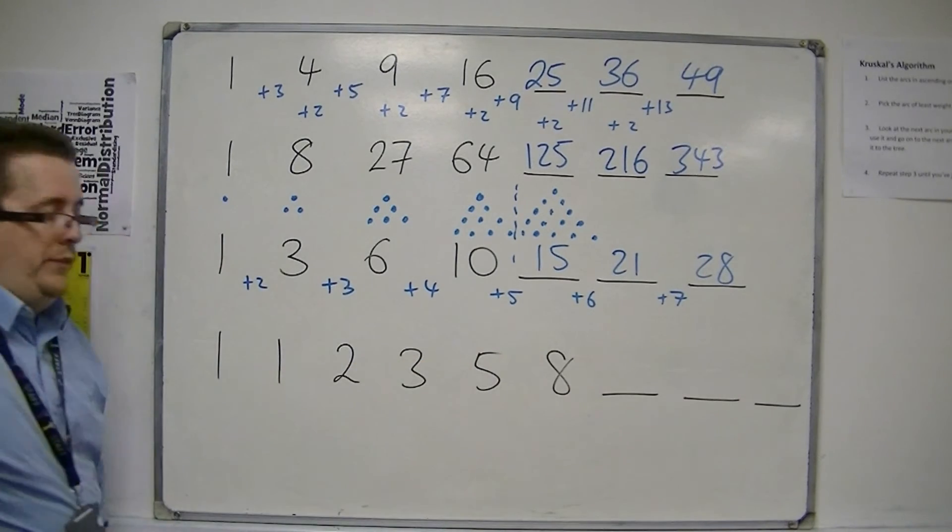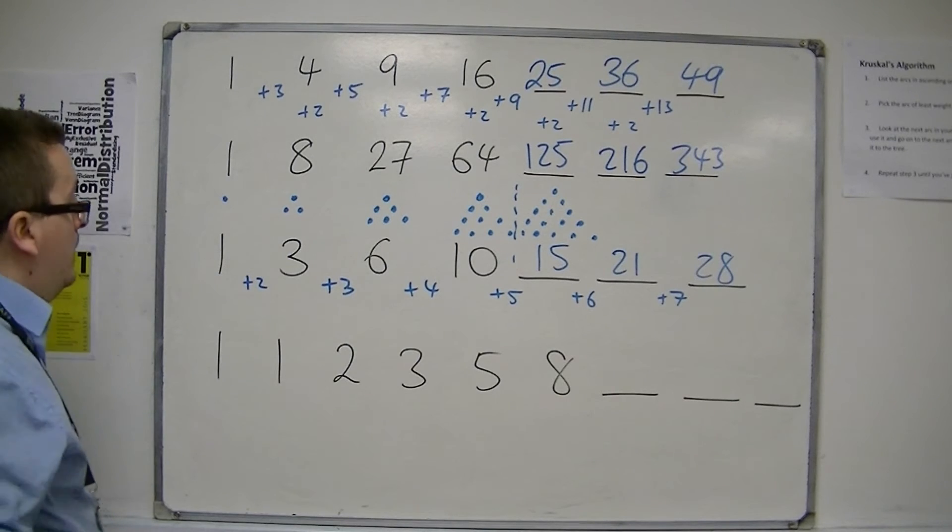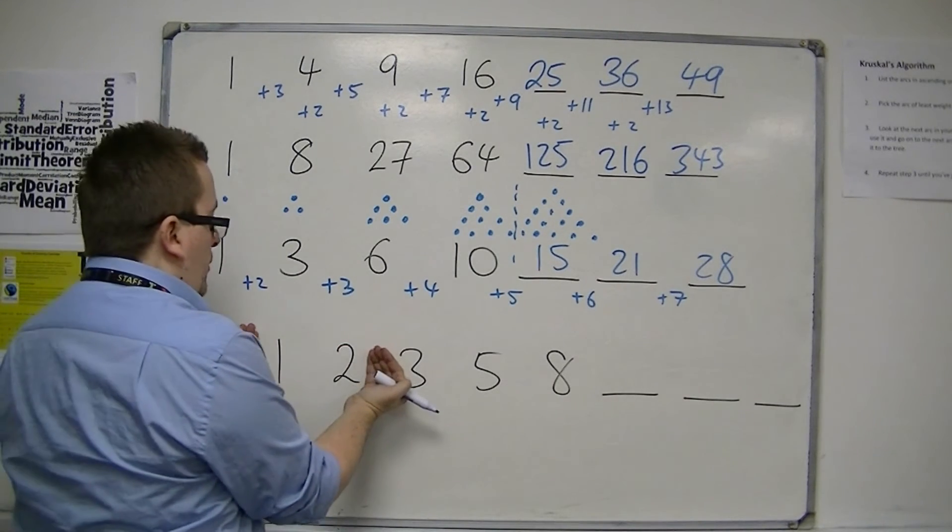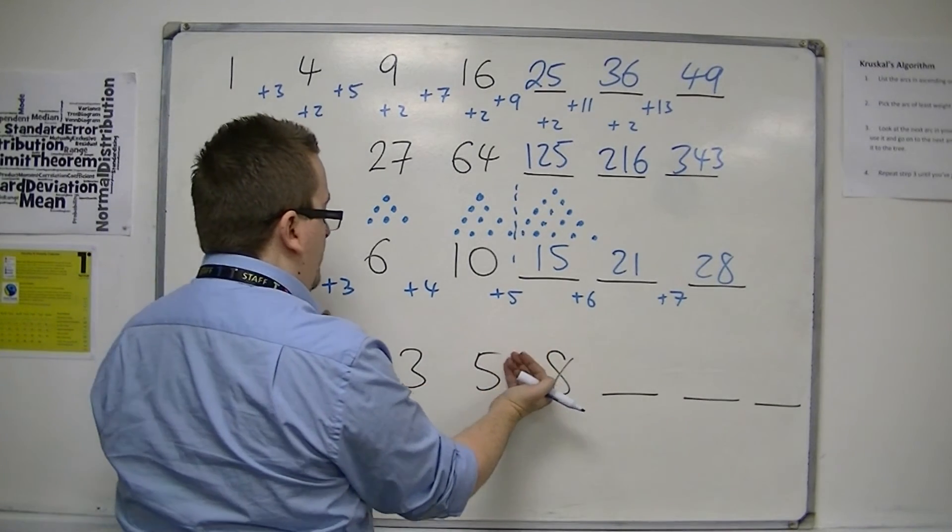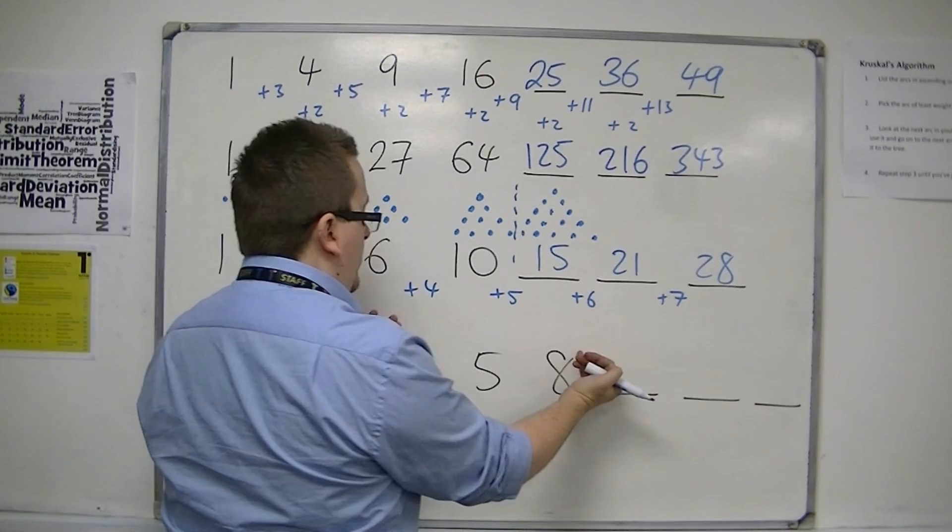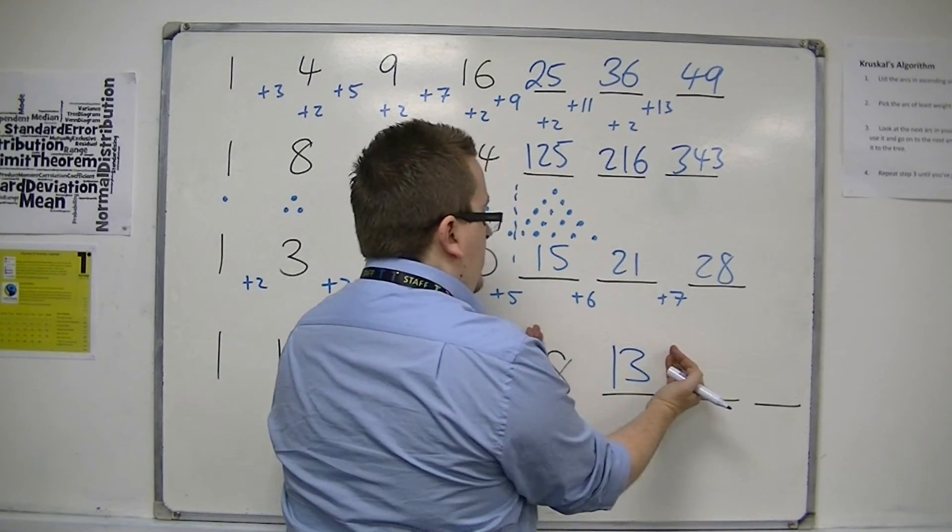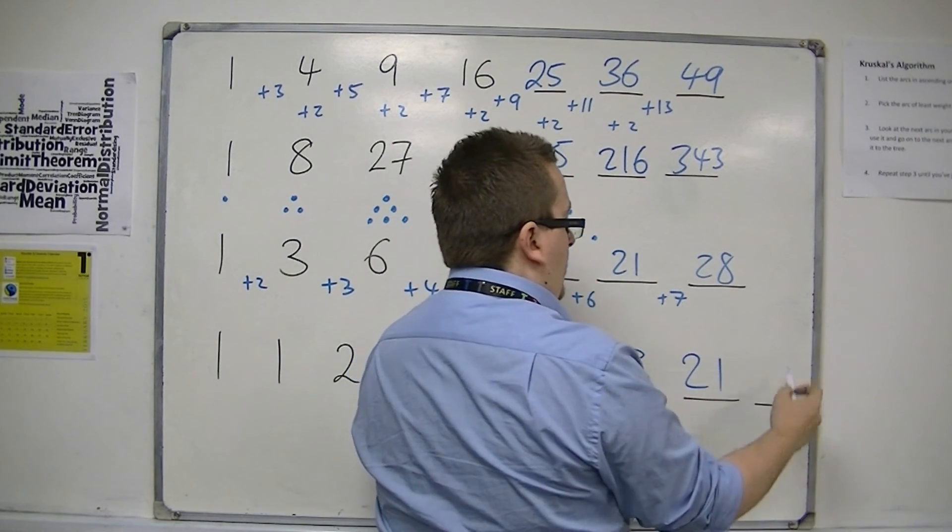The last sequence, I'm going to be quite impressed if you saw it, if you didn't already know what it is. This is coming from 1 plus 1 is 2, 1 plus 2 is 3, 2 plus 3 is 5, 3 plus 5 is 8. So 5 plus 8 is 13, 8 plus 13 is 21, and 13 plus 21 is 34.